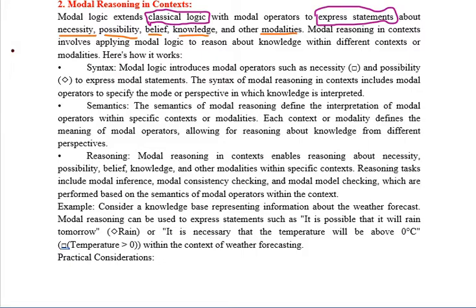These are the things which you have to remember. Model reasoning involves necessity, possibility, belief, and knowledge. Modal reasoning in context involves applying modal logic. We are looking at the context. Modal reasoning is used to express statements — the kinds of statements being necessity, possibility, belief, and knowledge.